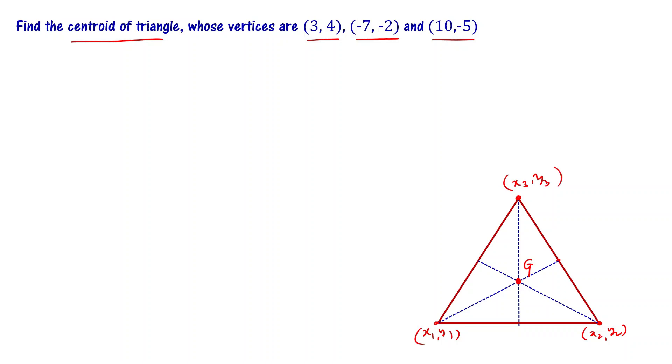The centroid G(x, y) is defined as: x equals (x1 + x2 + x3) divided by 3, and y equals (y1 + y2 + y3) divided by 3.